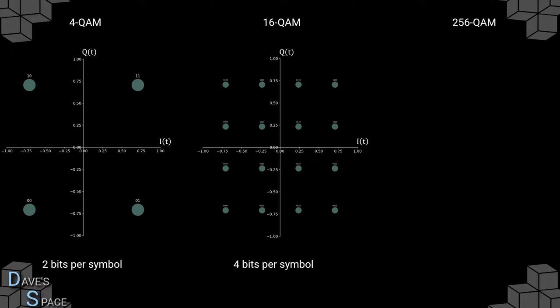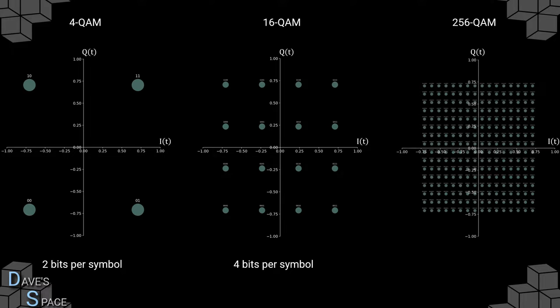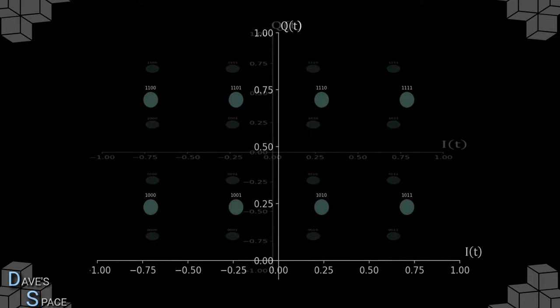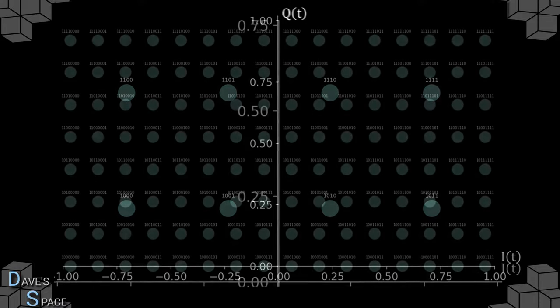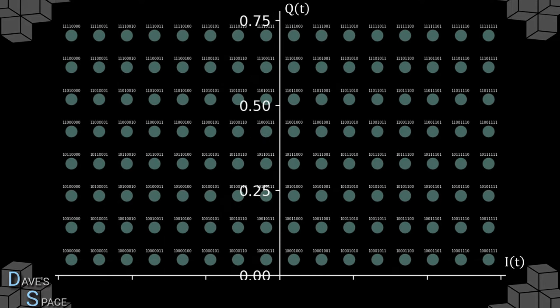We can fit even more states onto our constellation diagram by going to higher levels of QAM, such as 256-QAM. In this case, we have a total of 16 amplitude states for both the I(t) and Q(t) channels, and for this system we would be sending eight bits per symbol. You can clearly see how the different amplitudes of I(t) and Q(t) correspond to different bit values, and for 256-QAM we see eight bits per symbol.